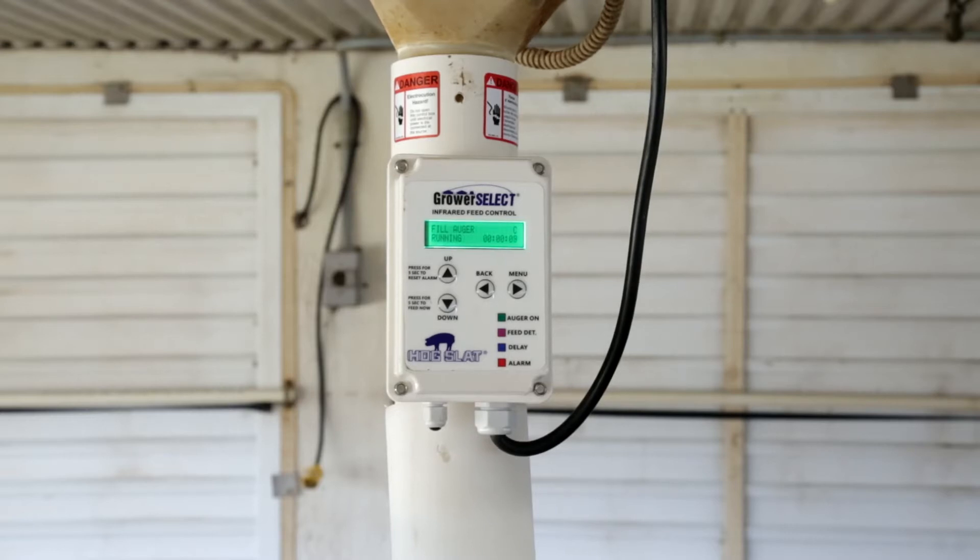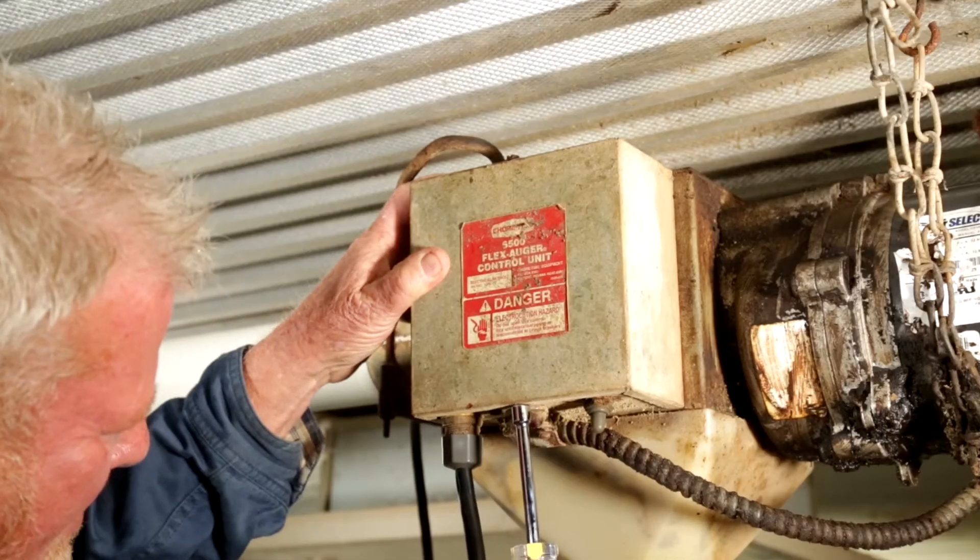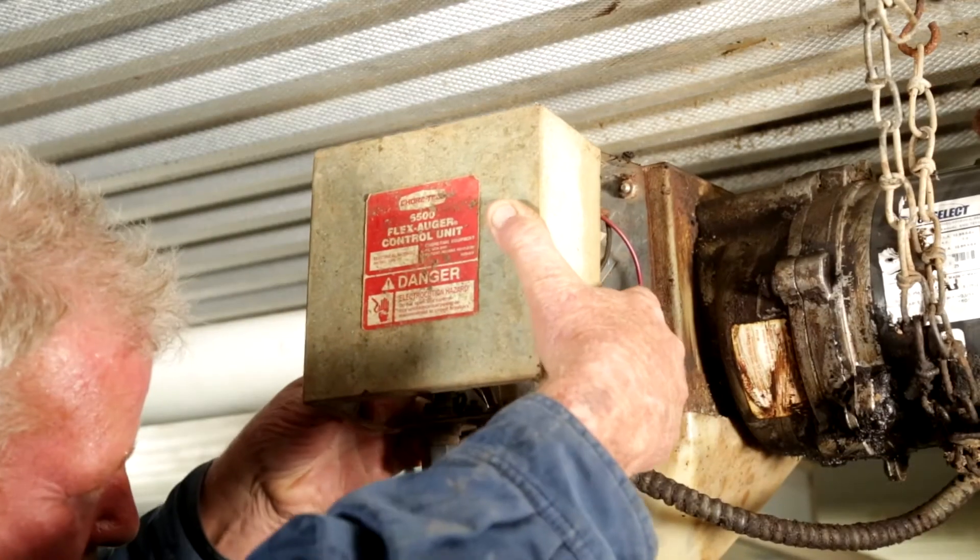As an example, we're going to demonstrate how to connect it to a chore time control box. Turn off power to the system and unplug the existing control box. Remove the cover to the control box and disconnect the drop tube.